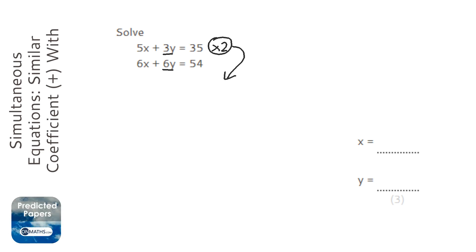We've got to make sure we times everything by 2, so 5x becomes 10x, 3y becomes 6y, and 35 becomes 70. Now it might be easier to copy out the second equation again.